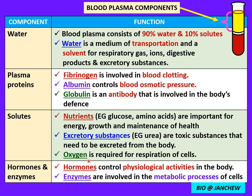Oxygen is also transported and required for the respiration of cells. Hormones control physiological activities in the body such as growth, reproduction, and regulation of blood sugar level. Enzymes are transported in the blood plasma and are involved in the metabolic processes of cells, catalyzing certain chemical reactions.